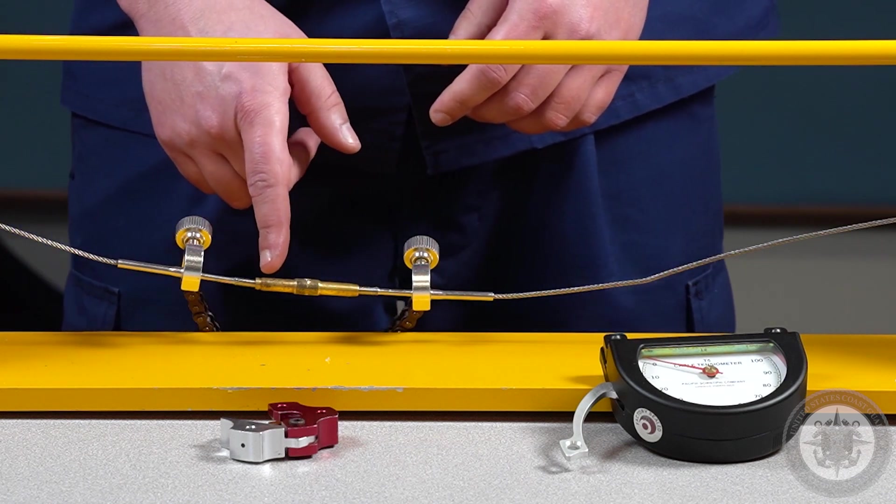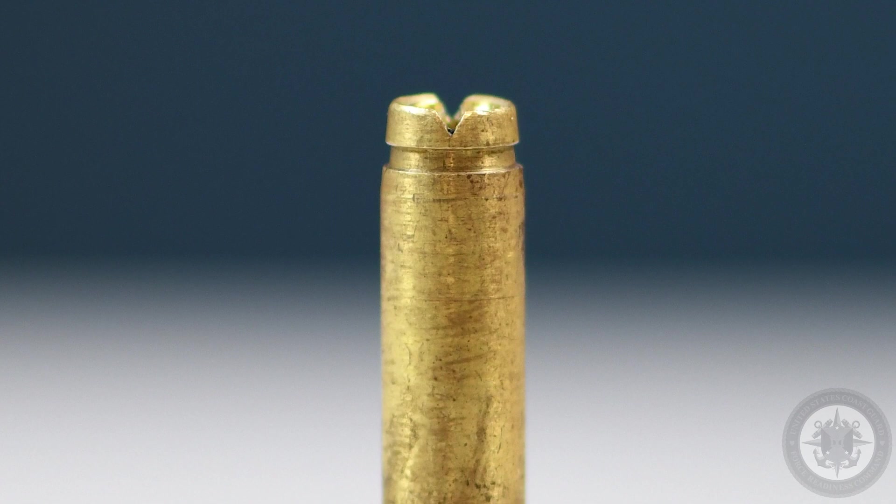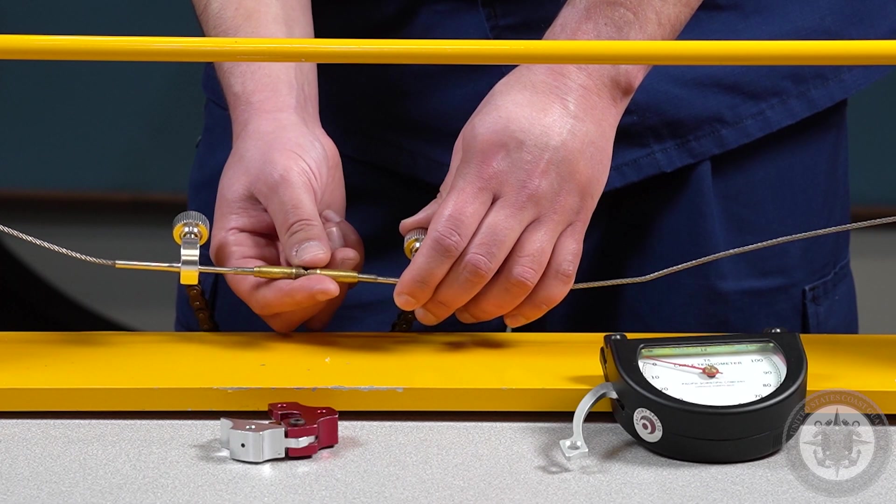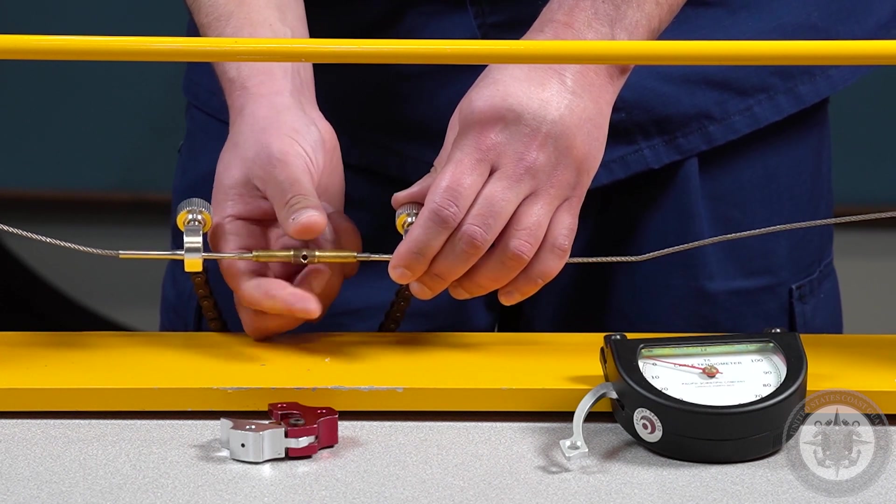The groove or knurl on the one side of our turnbuckle indicates the left hand threads. So to get this started, I will just turn my turnbuckle and start to apply tension to my cable.